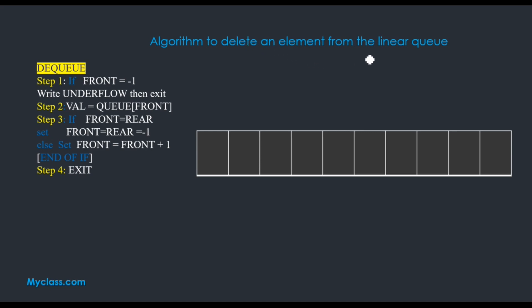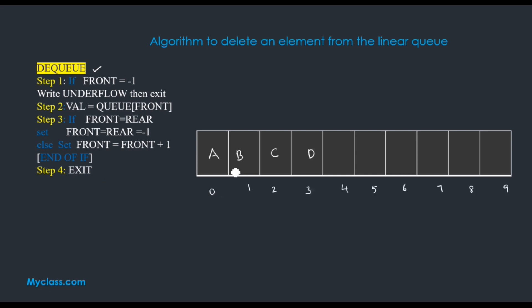Now the algorithm to delete an element from the linear queue — that is the dequeue (DQ) operation. Step 1: if the queue is empty we cannot delete elements from it. For that we check the condition: if front equals minus 1, write underflow and go to the exit step. Otherwise, if something is in our queue, our front is pointing to 0 and rear is pointing to 3. We want to check the underflow condition first — that is step 1.